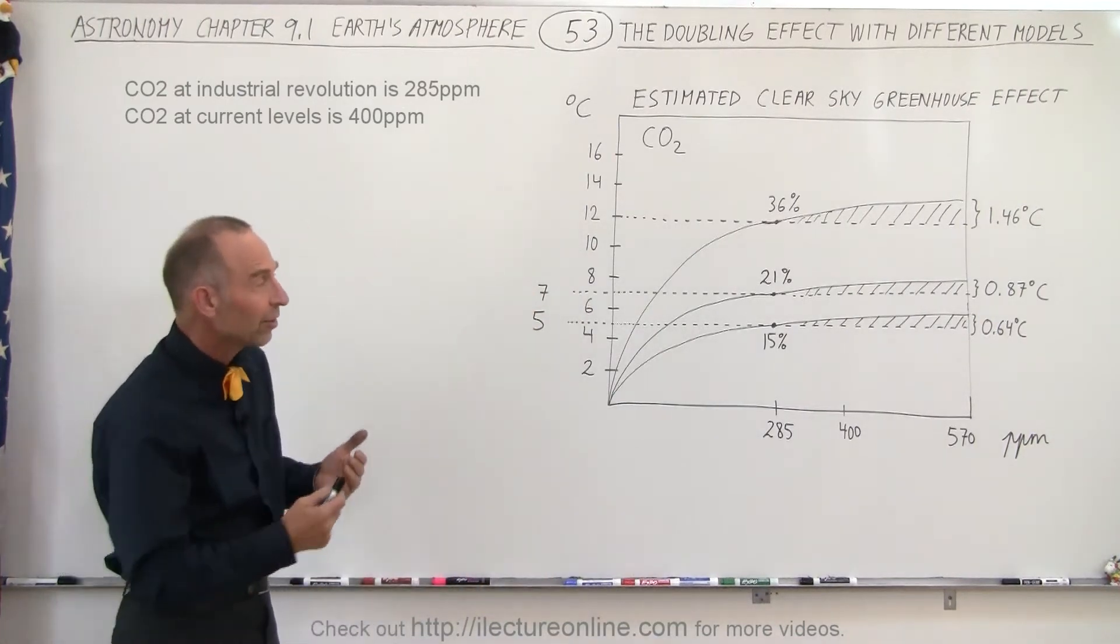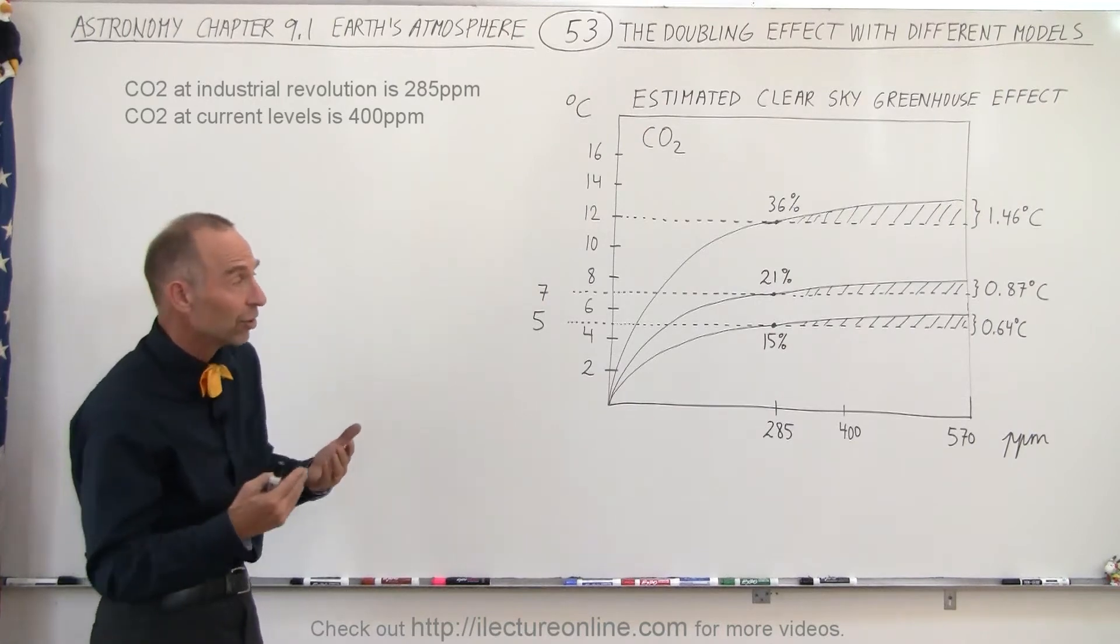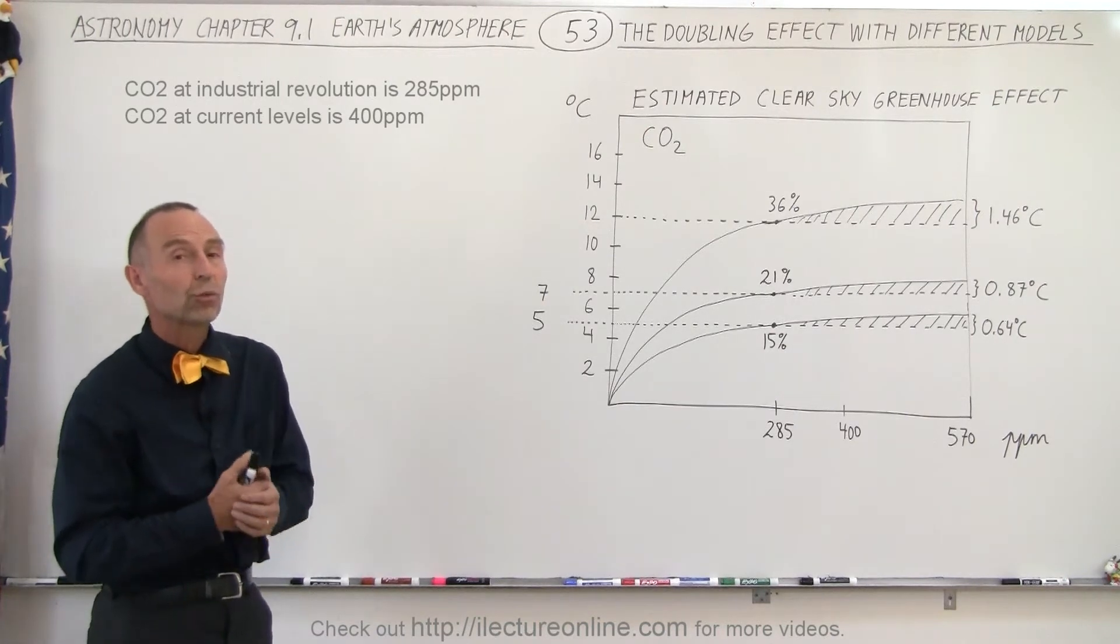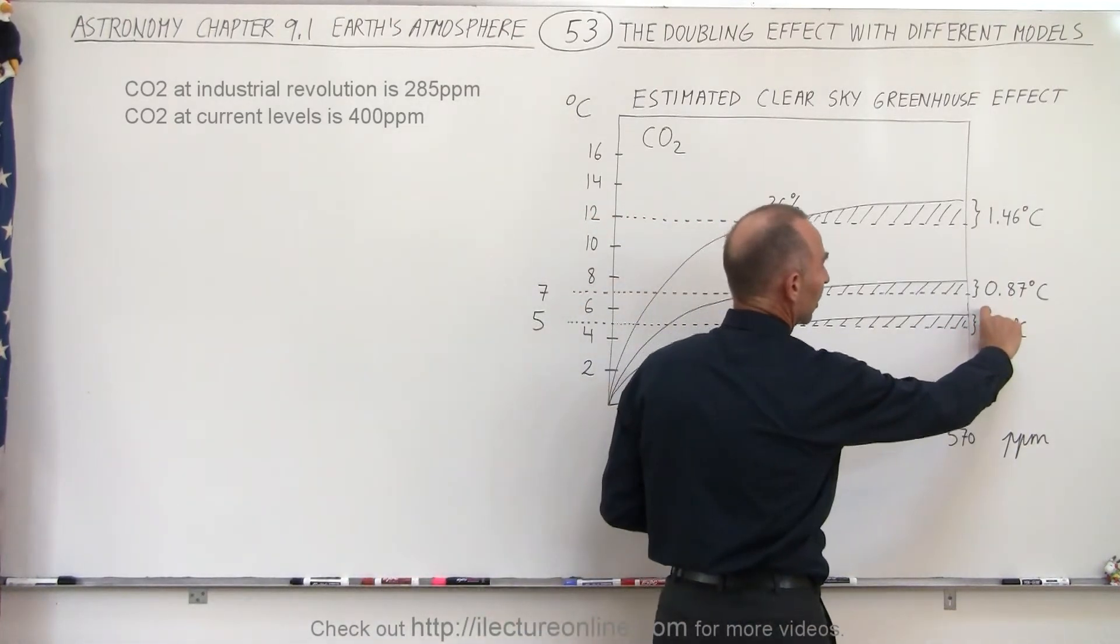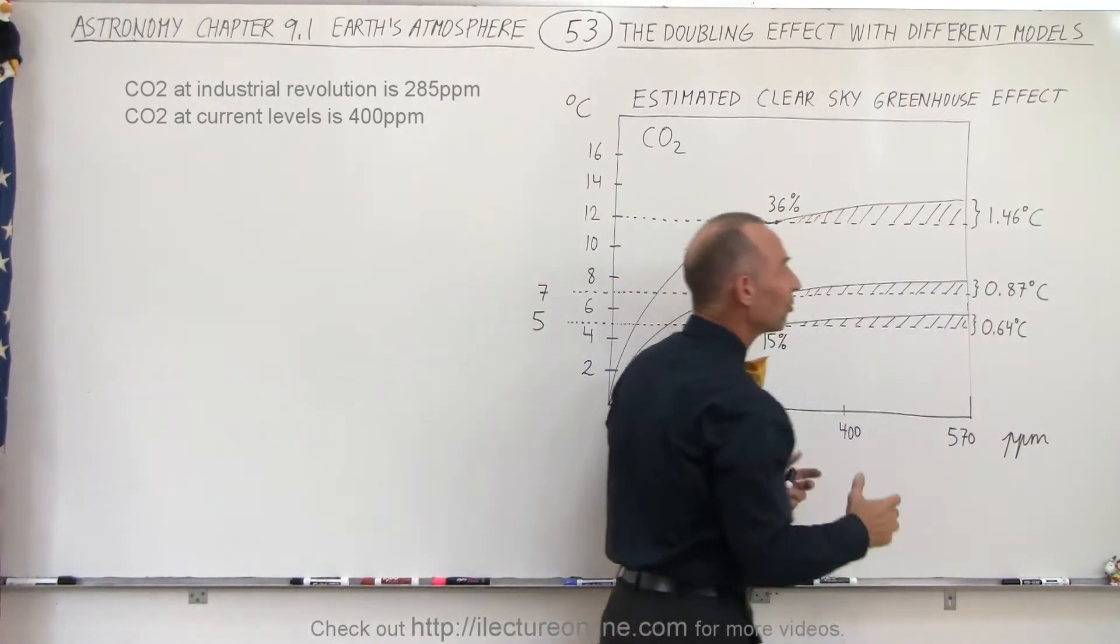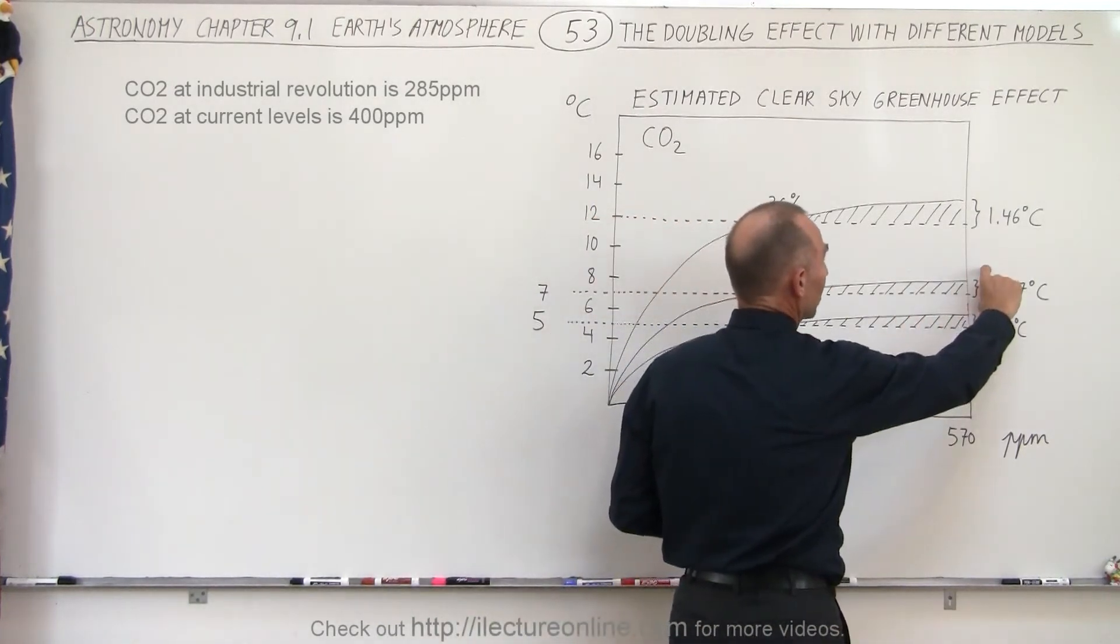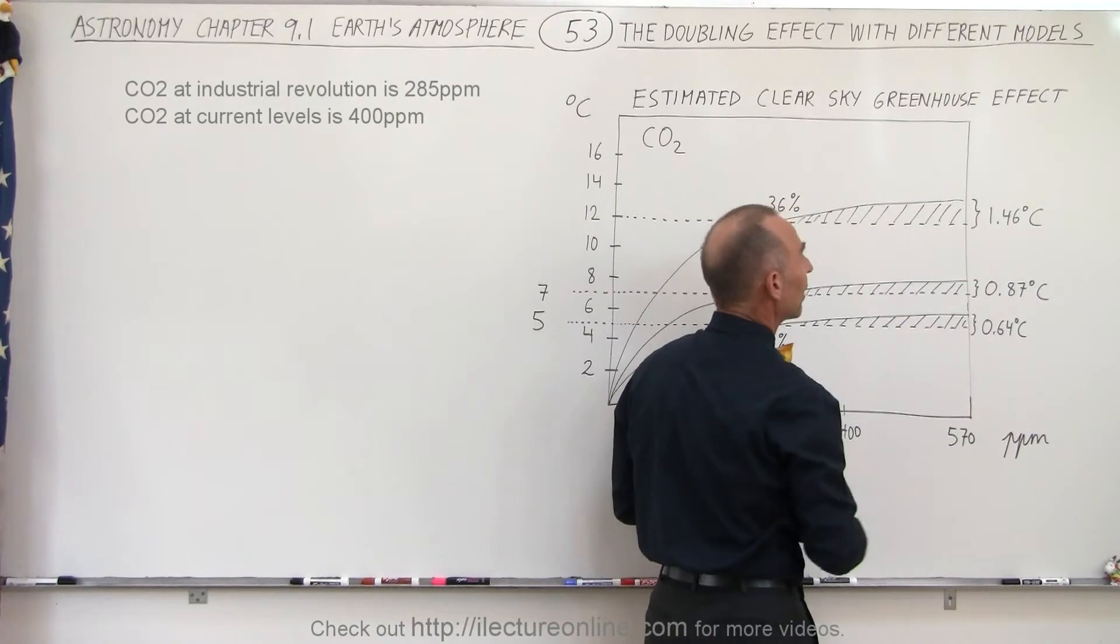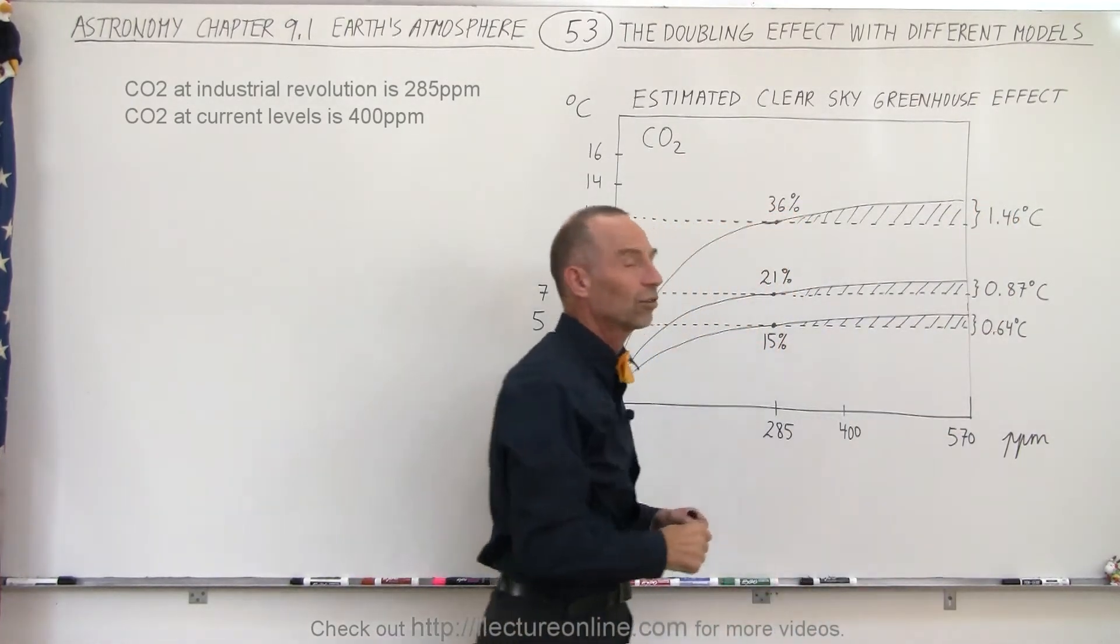One thing illustrated here is that there's a lot of variation in the various models that try to predict what the change will be. Notice a doubling of carbon dioxide with the first model predicts a temperature increase of about 0.64 degrees centigrade, the next model predicts 0.87 degrees centigrade, and the next model predicts 1.46 degrees centigrade.